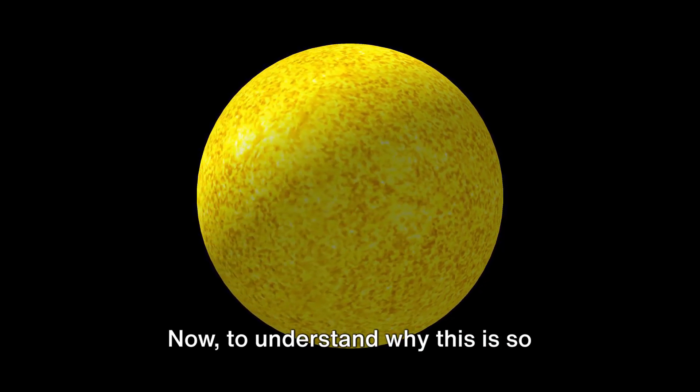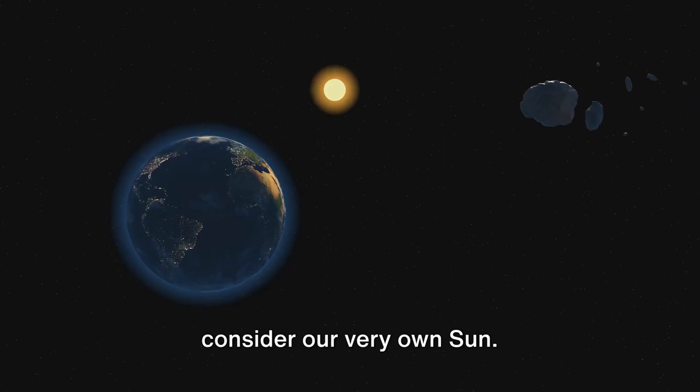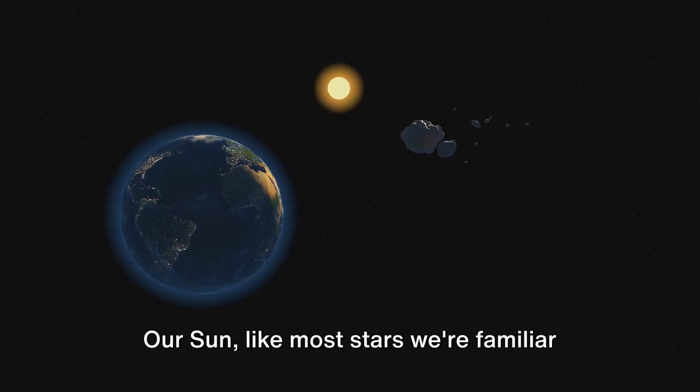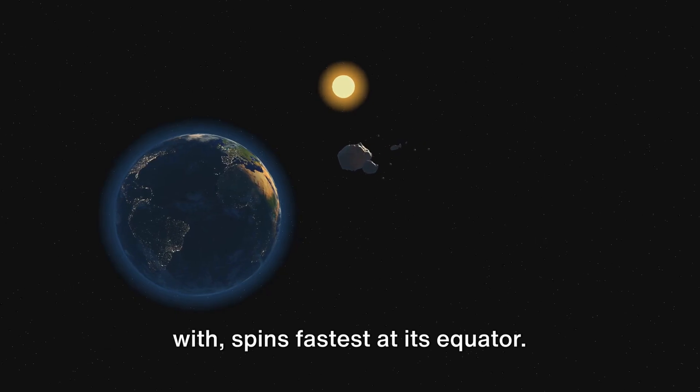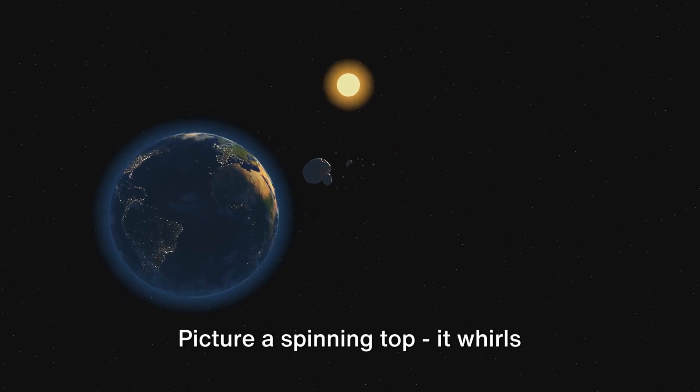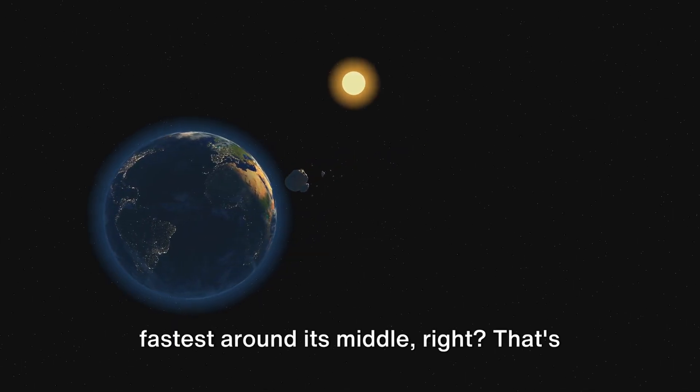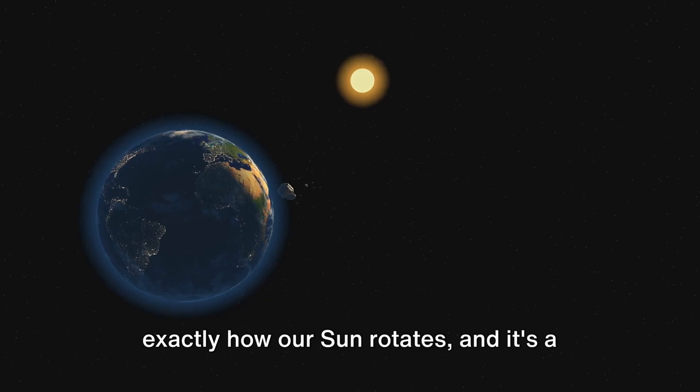To understand why this is so intriguing, let's consider our very own sun. Our sun, like most stars we're familiar with, spins fastest at its equator. Picture a spinning top - it whirls fastest around its middle, right? That's exactly how our sun rotates, and it's a pattern we've come to expect from stars in general.